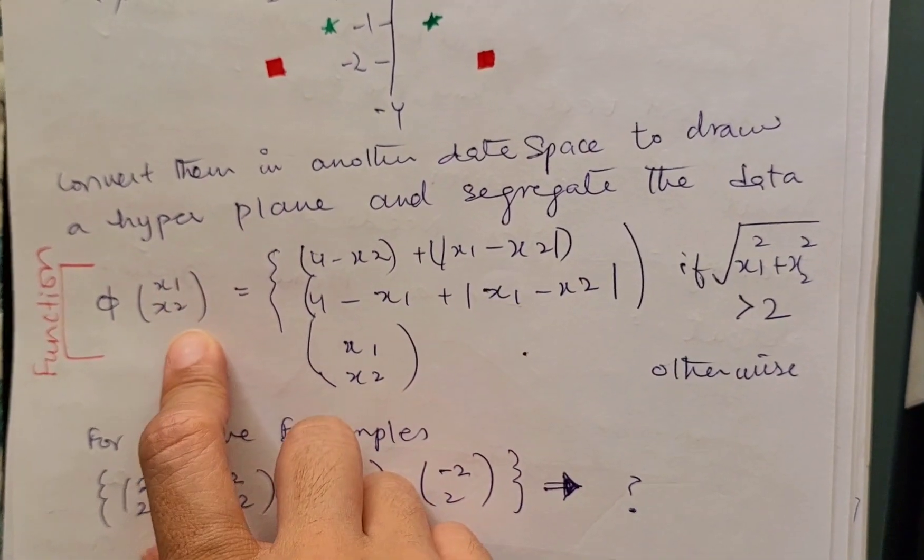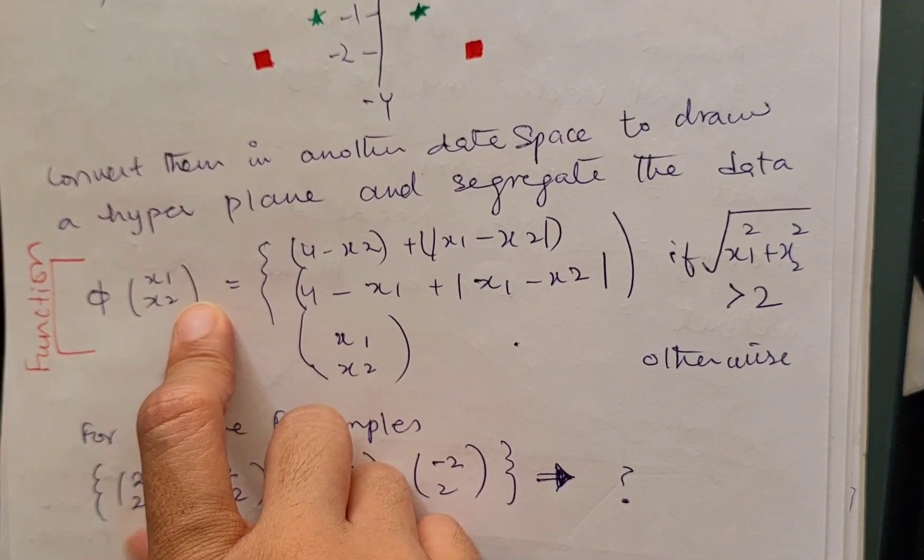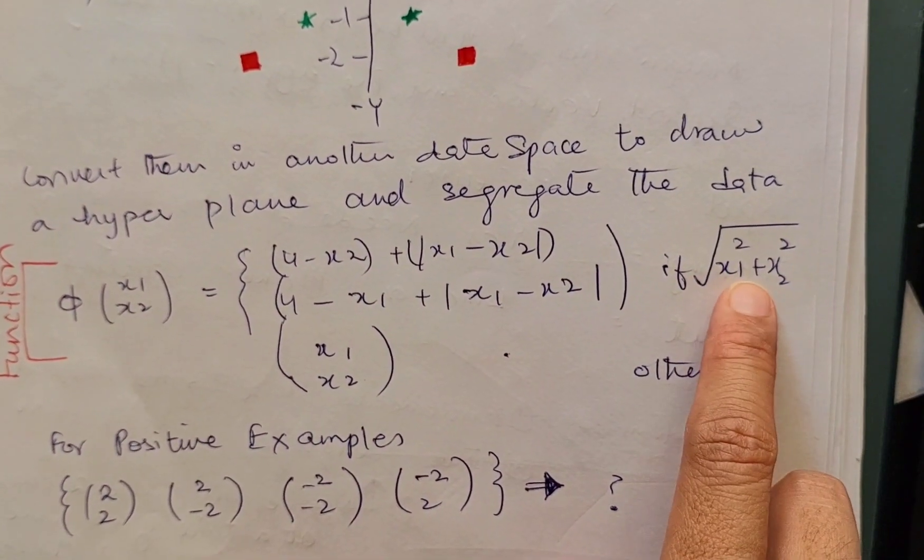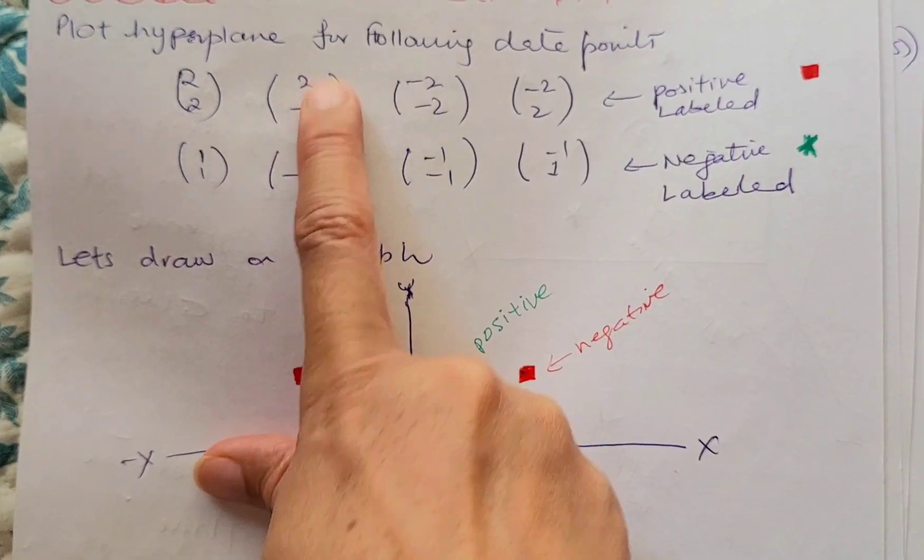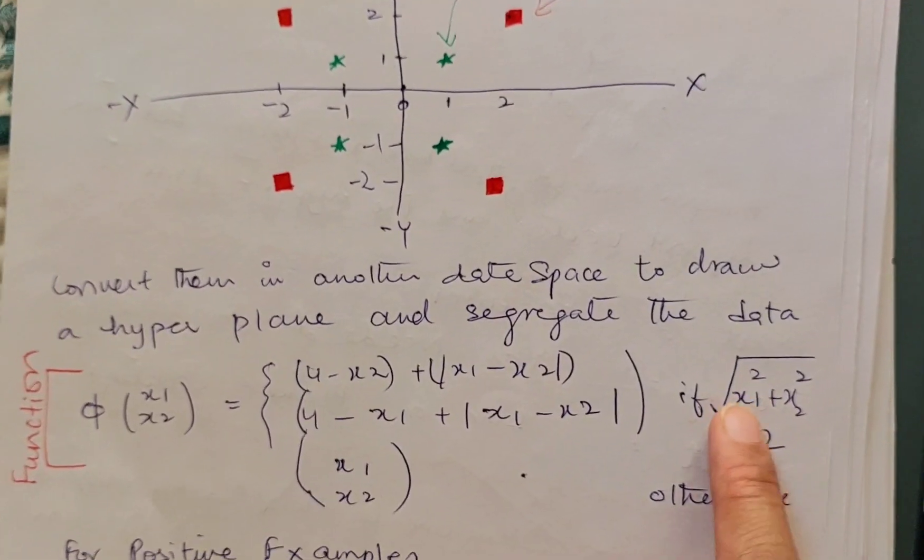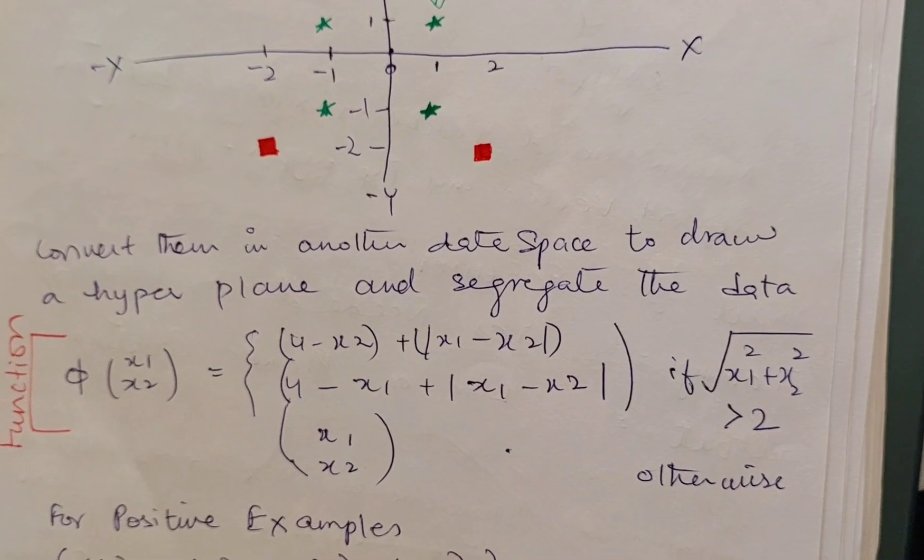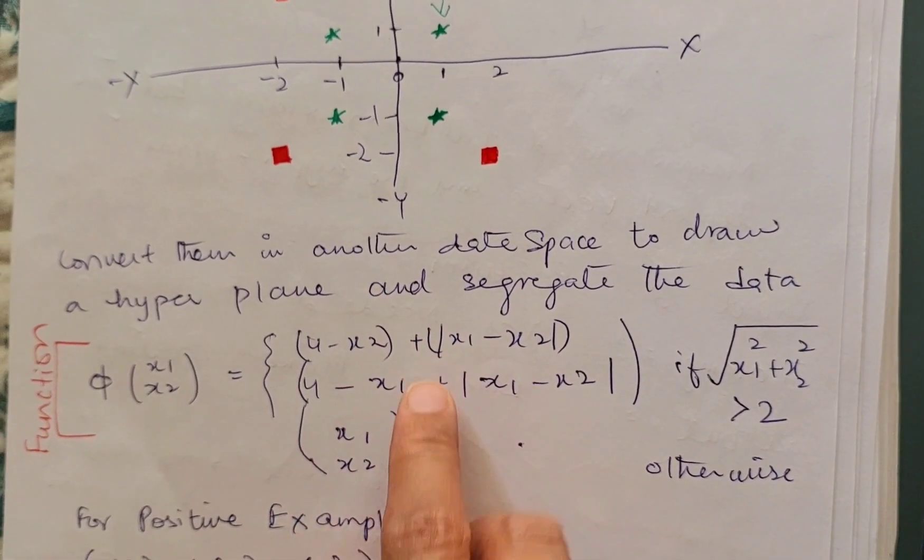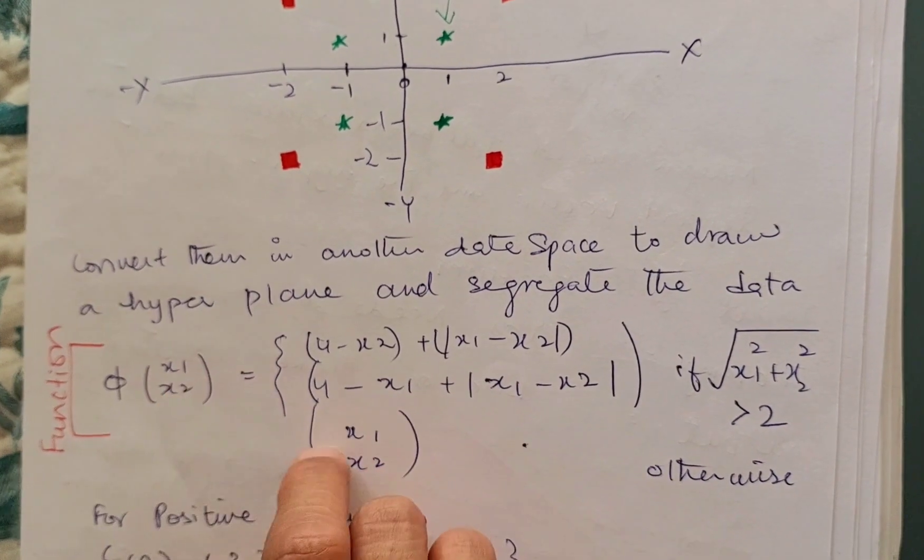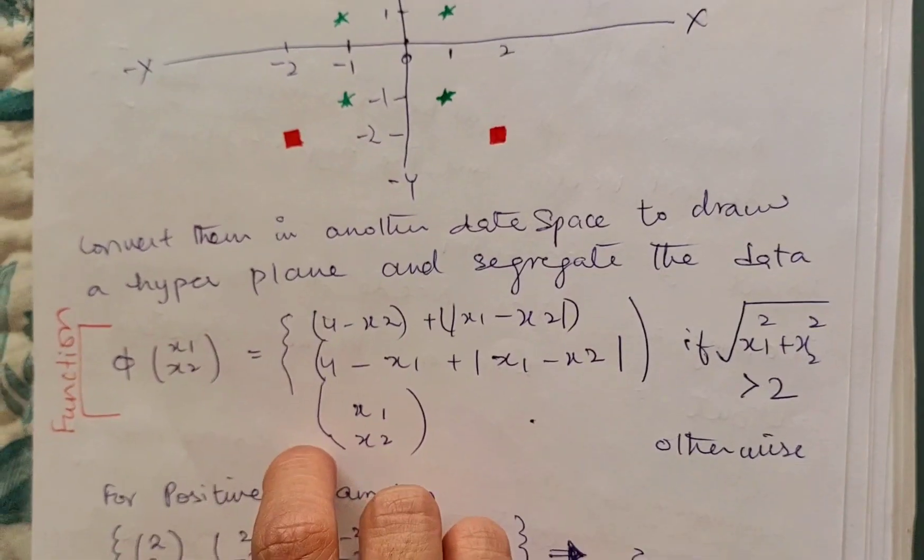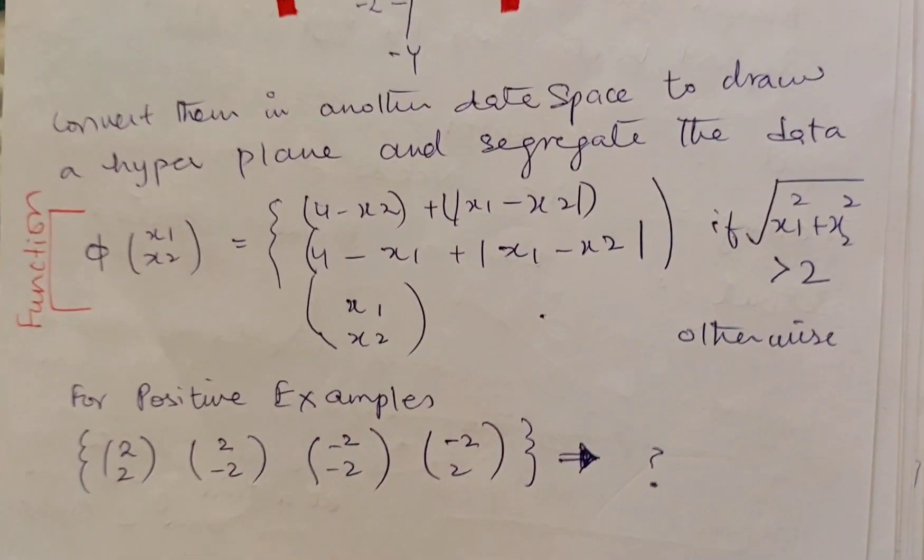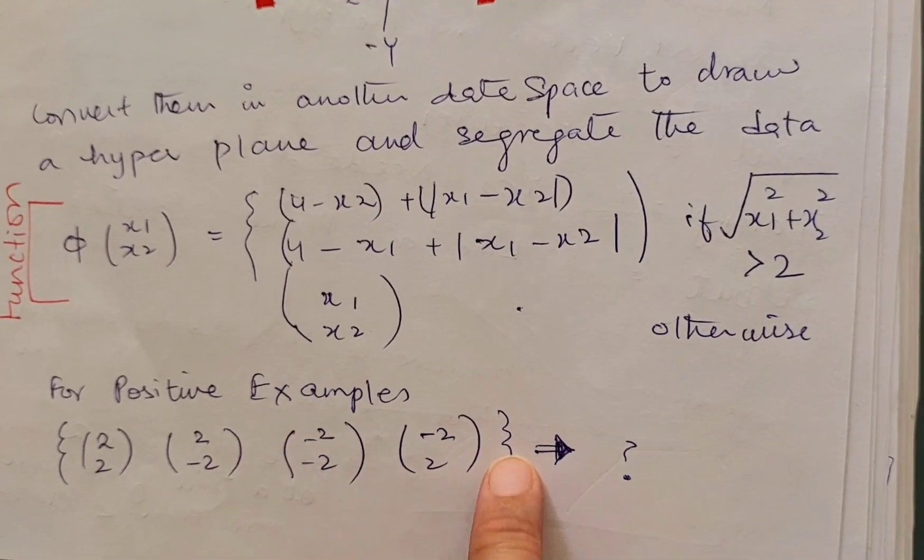For this purpose, in this question I am provided with this function. This is the function which says that if the value of sum of the two coordinates—these are the two coordinates—if the sum of these two coordinates is larger than 2, then use this equation to transform the data. Otherwise, simply keep it as it is.